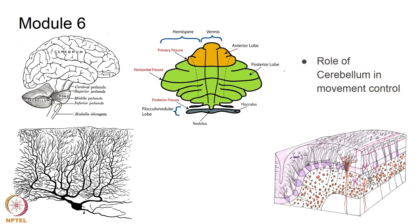In module 6 we will be discussing the cerebellum and how it plays an important role in modulating movements — its anatomy and physiology. We will discuss the various layers: the molecular layer, the Purkinje cell layer, and the granular layer. A Purkinje cell and its dendritic tree are also shown.